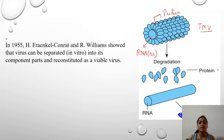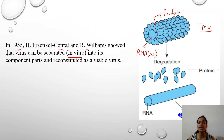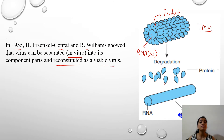This is the schematic structure of a tobacco mosaic virus. You can see the helical structures — these are the proteins made up of thousands of units — and the internal rod-like structure is its genetic material, single-stranded RNA. In 1955, scientists Fraenkel-Conrat and R. Williams performed experiments under in vitro conditions and found that the protein and RNA of the virus can be separated and reconstituted as a viable virus.